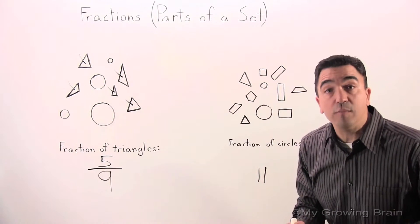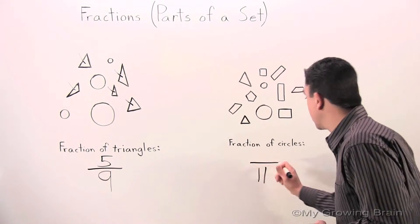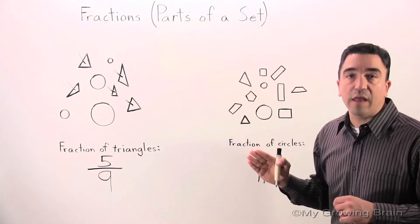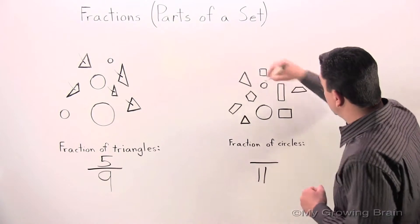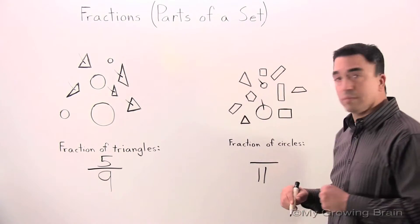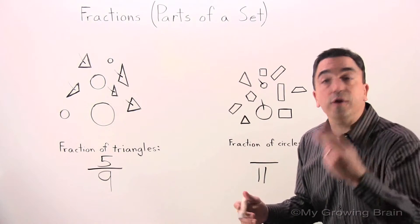Now, we have to find the numerator. The numerator is the total number of circles in our set. Let's count. 1, 2. The numerator is 2.